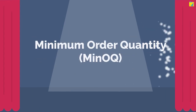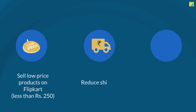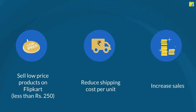As a part of one such initiative, we bring to you the Minimum Order Quantity feature or Minocube. This will help you sell low-priced products less than Rs 250 efficiently on Flipkart by reducing the shipping cost per unit. This may help increase your sales.